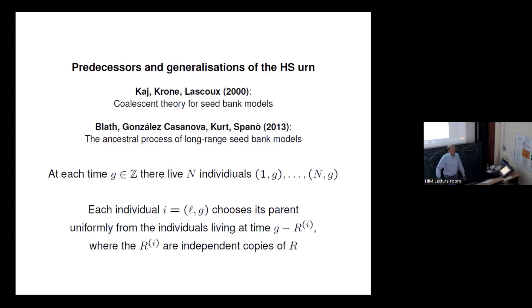Now this Hammond-Sheffield paper was not alone in the world. It had predecessors, concurrence and generalizations, and an important predecessor is the Kai-Krone-Lascoux paper from 2000 with the title Coalescent Theory for Seed Bank Models, and a concurrent and generalization at the same time is a paper by Blath-Gonzalez-Casanova-Kurt-Spano, the ancestral process of long-range seed bank models.